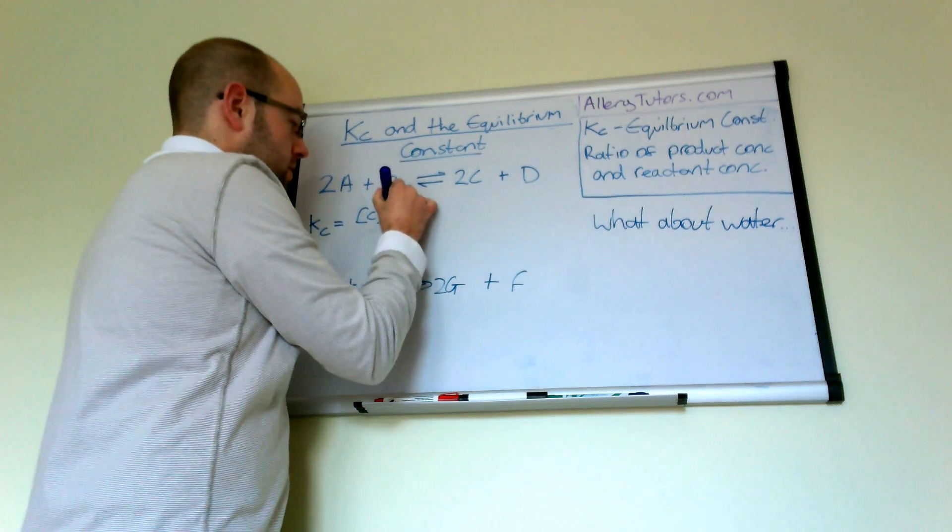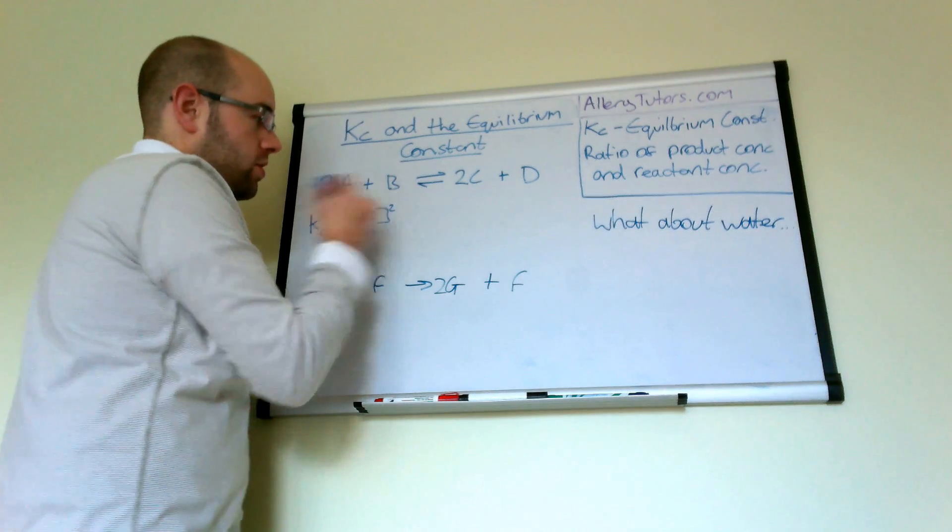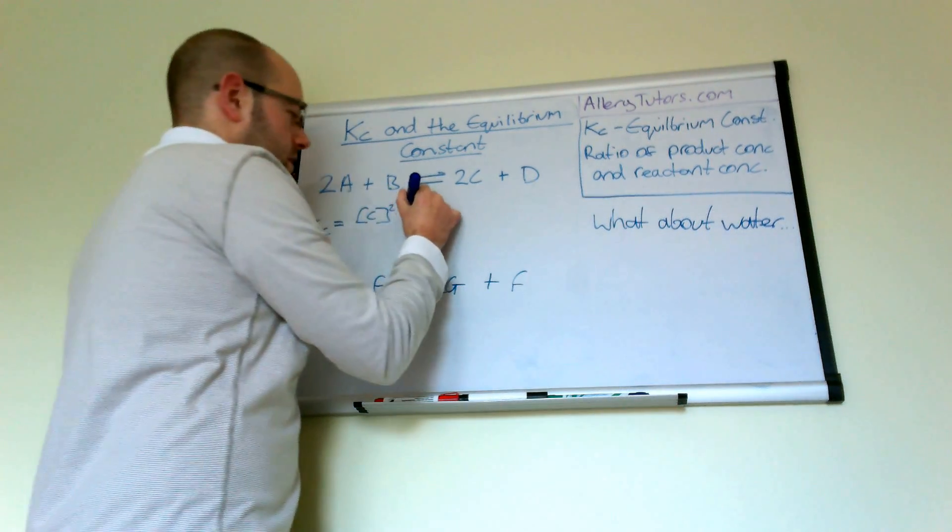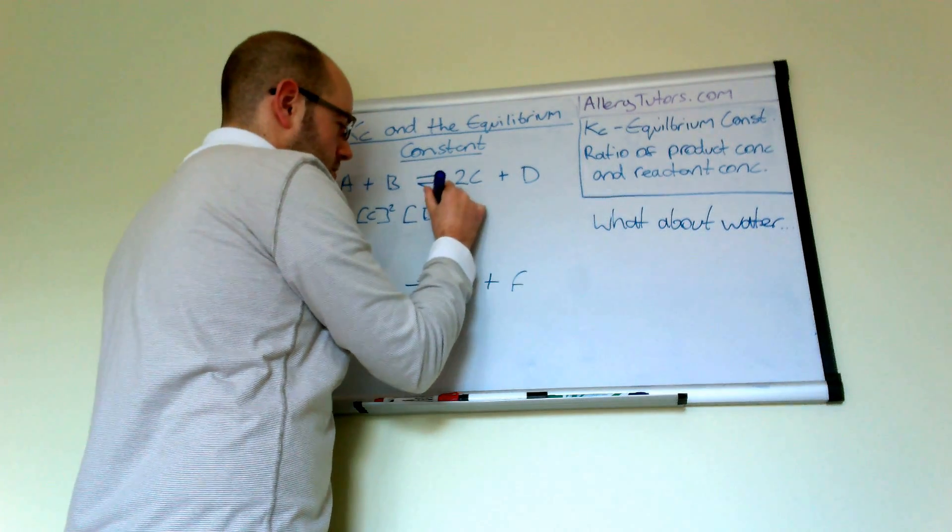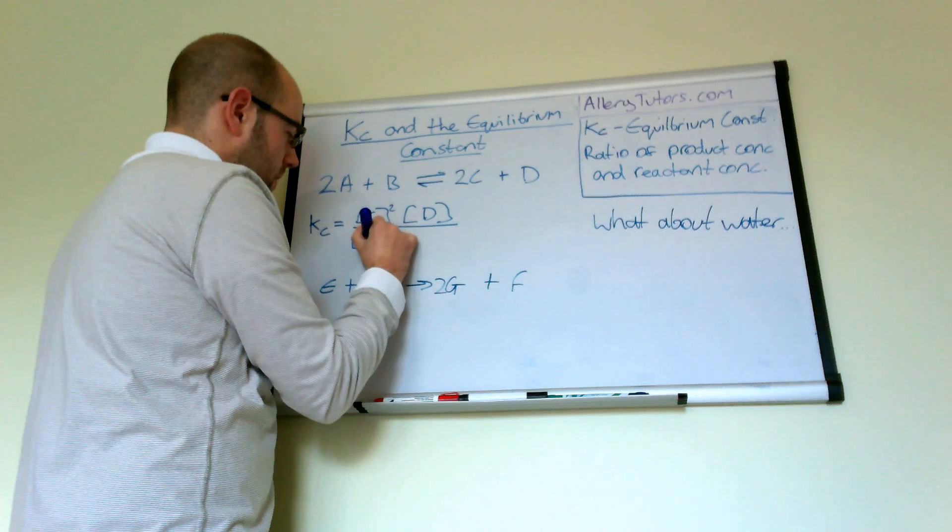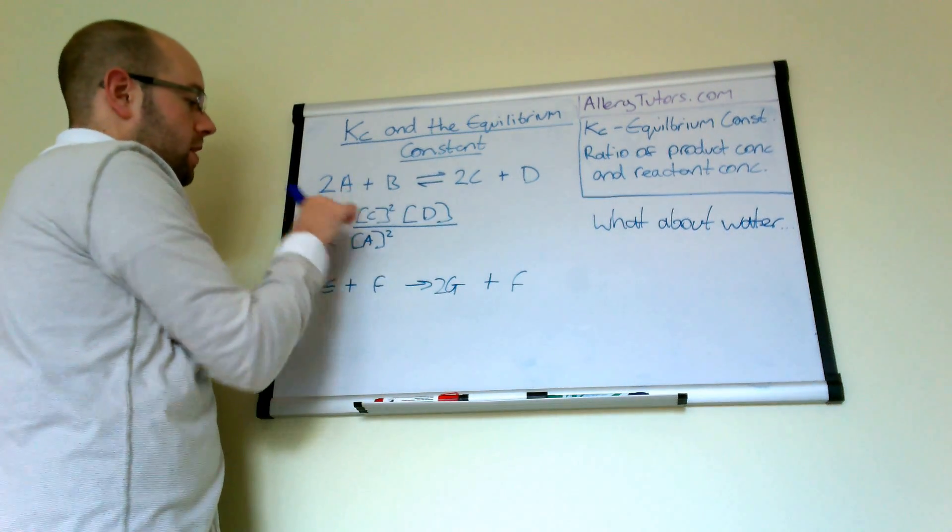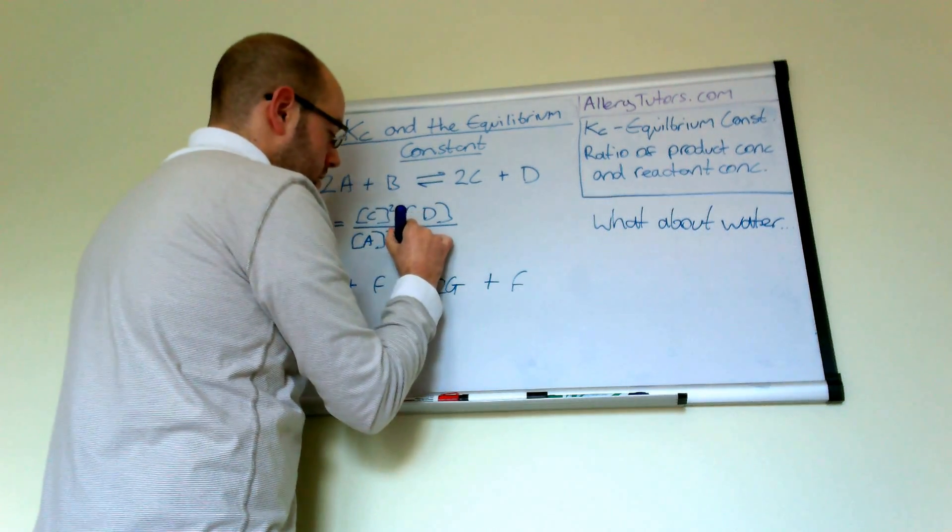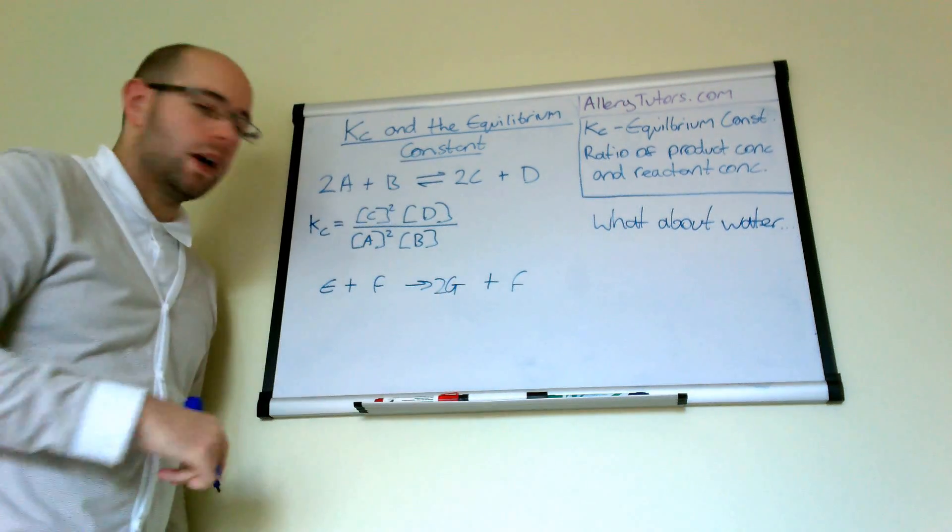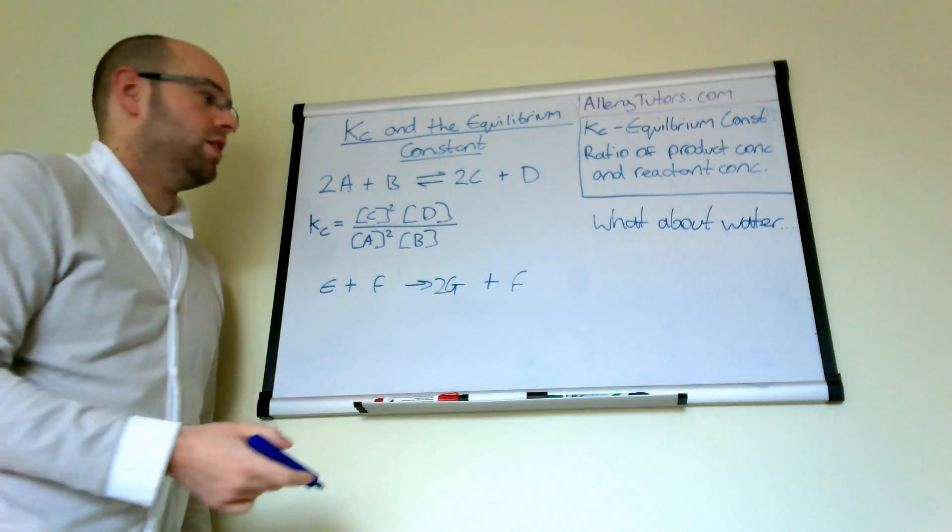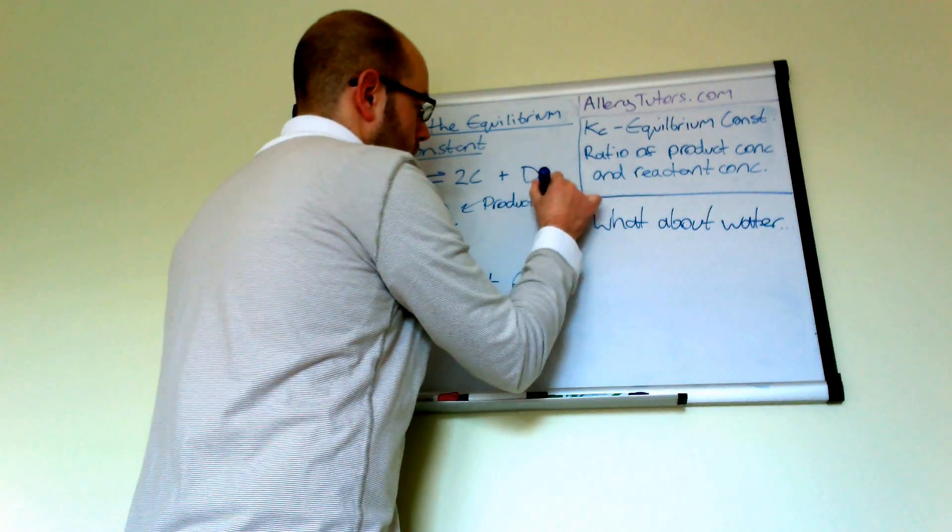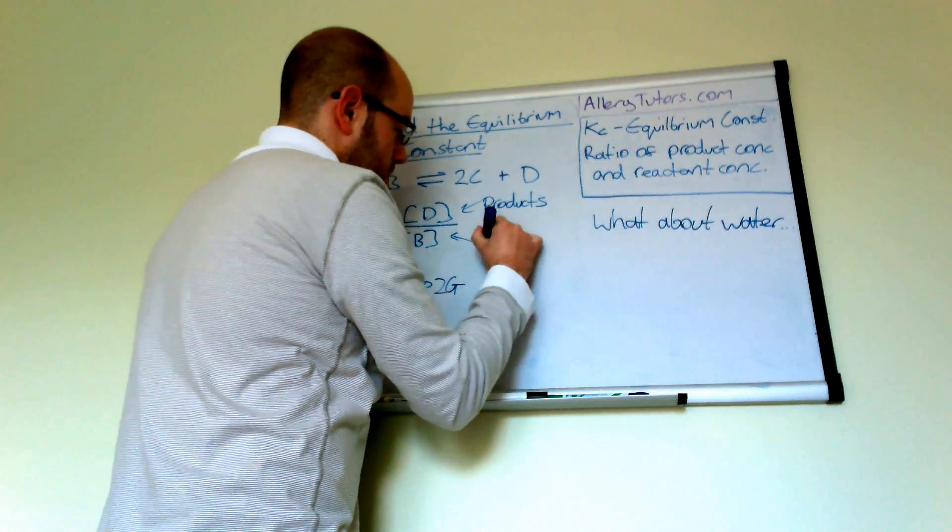and the little 2 before it is actually turned into a power and so we say this is C squared times by the concentration of D and we're going to divide that by the concentration of A and again because A is 2A we'll put a little power on there divided by the concentration of B and that's how you'd write a basic KC expression.